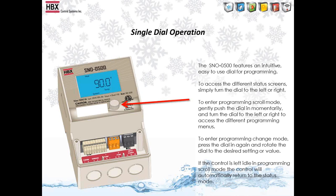The Snow 500 has an easy-to-use dial for programming that you can turn right or left and press gently to access the different settings within the control. If the control is left idle in programming mode, it will automatically return to the main status screen.